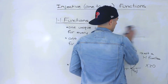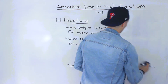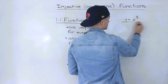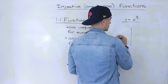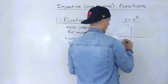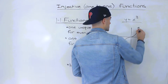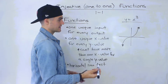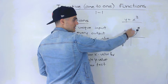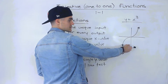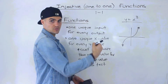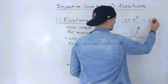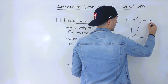What about y = x³? If we graph it, y = x³ is a one-to-one function because it passes the horizontal line test — there are no multiple x-values for a single y-value. So y = x³ is a one-to-one function.